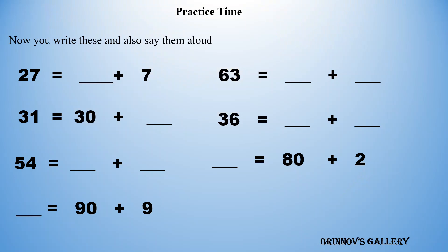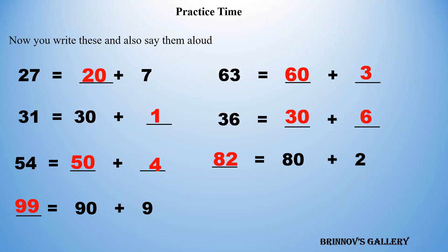Now you write these and also say them aloud. 27 equals 20 plus 7. 31 equals 30 plus 1. 54 equals 50 plus 4. 99 equals 90 plus 9. 63 equals 60 plus 3. 36 equals 30 plus 6. 82 equals 80 plus 2.